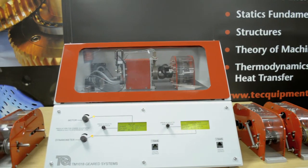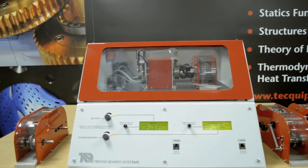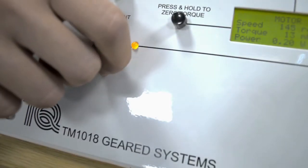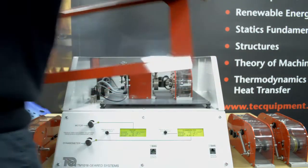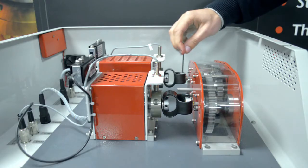TechWomen's TM1018 allows for studies of velocity ratios and efficiencies of various geared systems. The TM1018 includes an interlock guard to give students easy access to change the gears.